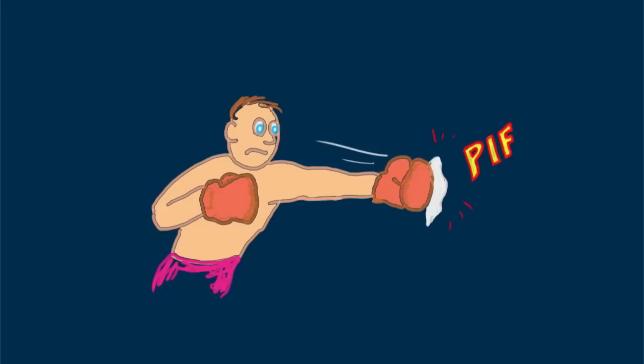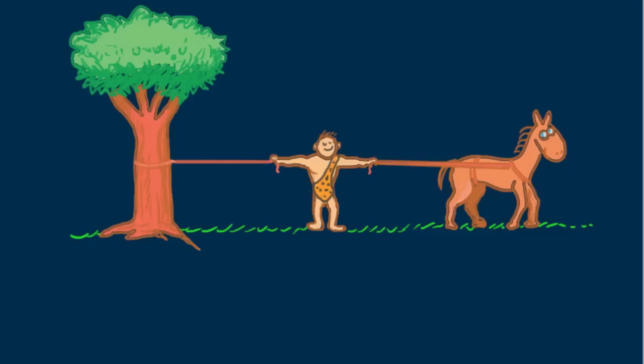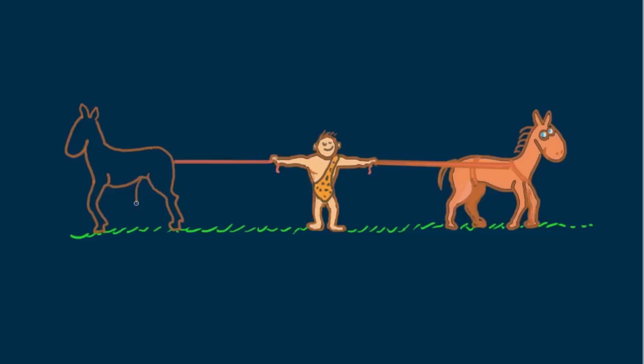Here we see Sammy Strongman being pulled by two ropes, one tied to a tree and the other to a horse. Sammy is okay with the tensions in the ropes. He's a strong guy. How would the tension in the ropes compare if the tree were replaced by a horse as strong as the horse on the right?